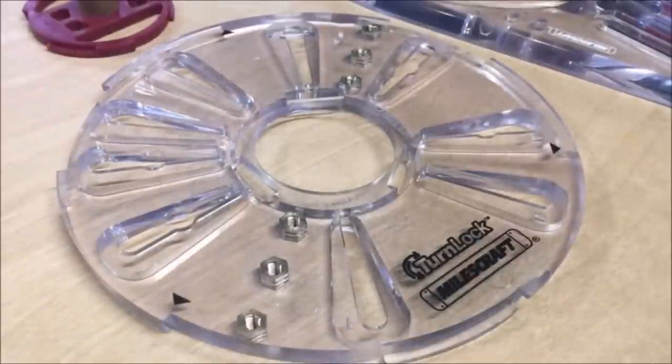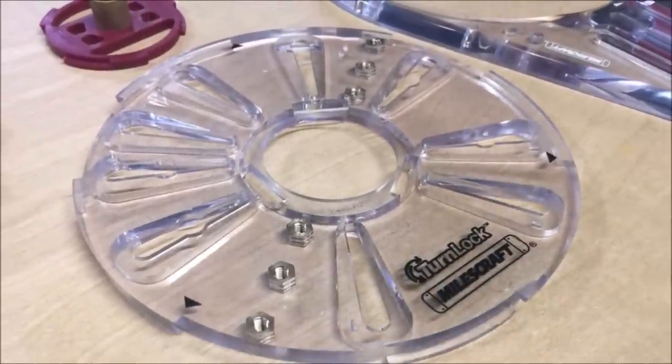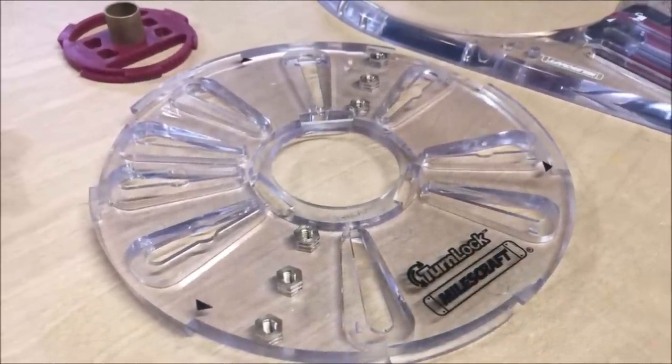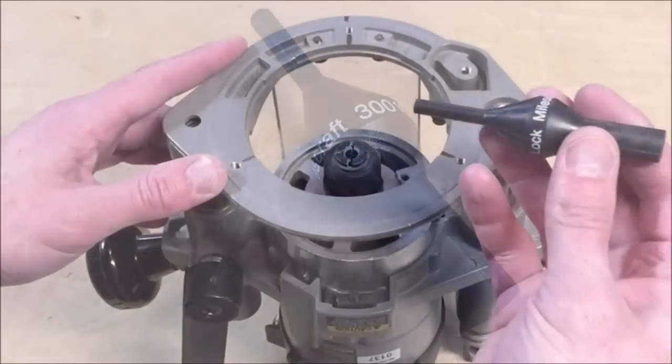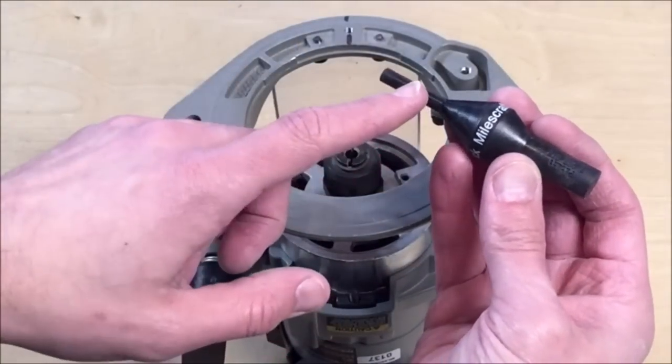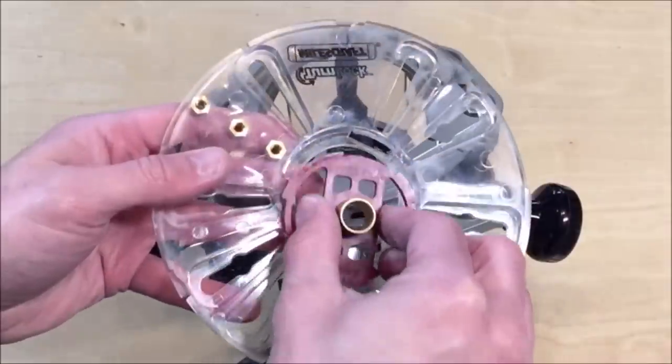You will need to remove the manufacturer's router base plate and install the MilesCraft Turnlock router base. Installation is easy as the kit provides the collet and centering pin with both quarter-inch and half-inch diameters for aligning the base to your router.